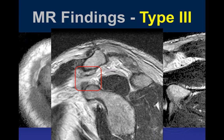On x-rays you can see the separation of the AC joint and any gross bony displacements. The next types can all be identified on plain radiographs, but not necessarily Type 3 — you don't get significant elevation with Type 3; that's a later type.